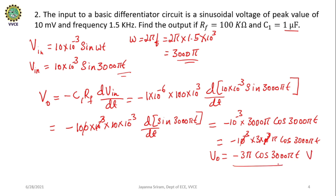This is the output voltage for the given input VIN = 10 × 10⁻³ sine(3000πT). That's all about this problem.